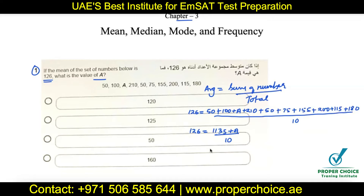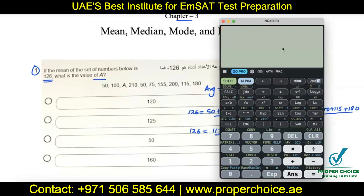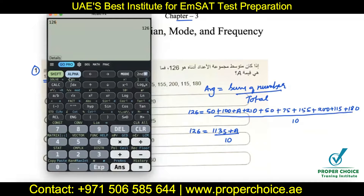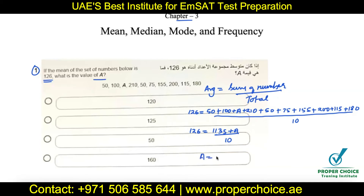You can cross-multiply or use the calculator since it is allowed. Type the equation as: 126 equals (1135 plus x) divided by 10, using x for the unknown. On a physical calculator, press Shift, Calc, and then Equals after typing the expression. The answer is x equals 125, so a equals 125 — that is option B. This is how questions on finding missing terms in a set of numbers are asked.